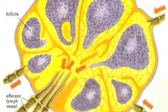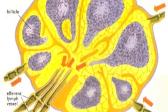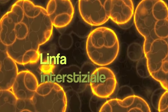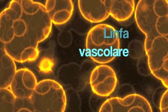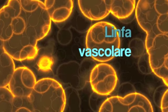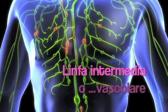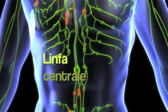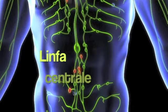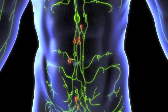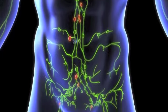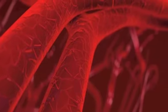Vascular lymph is further subdivided: before being filtered by the lymph nodes it is called peripheral lymph; after entering the lymphatic vessels and being filtered it becomes intermediate lymph; and finally, central lymph is the lymph that circulates through the lymphatic channels and is ready to enter the venous system.